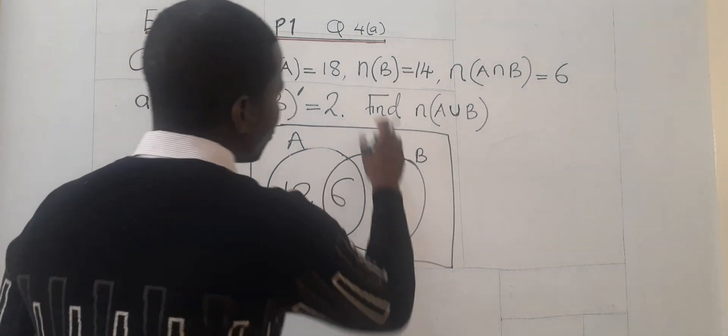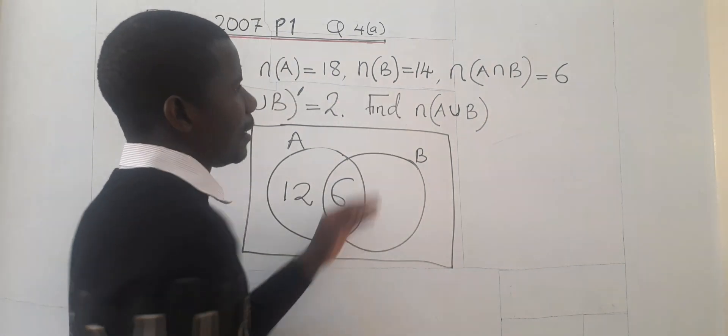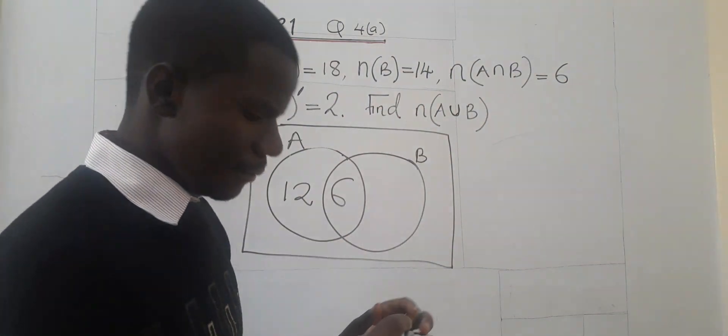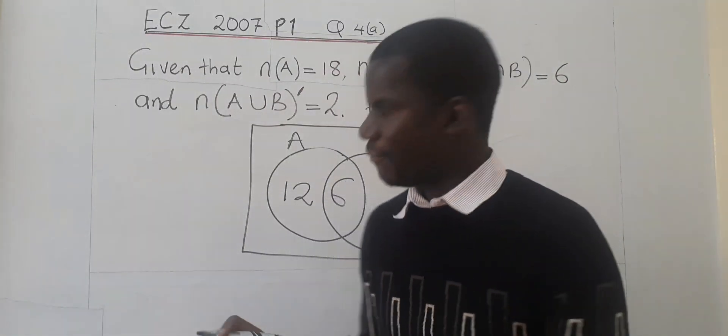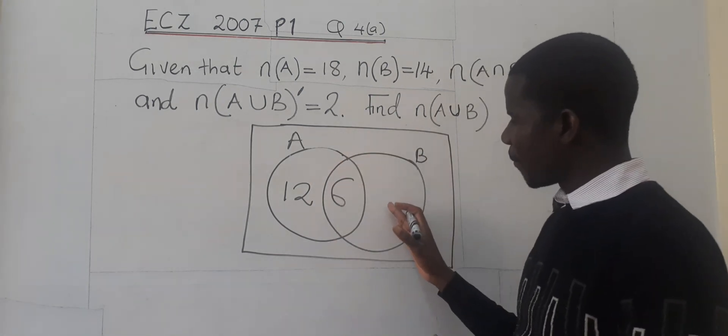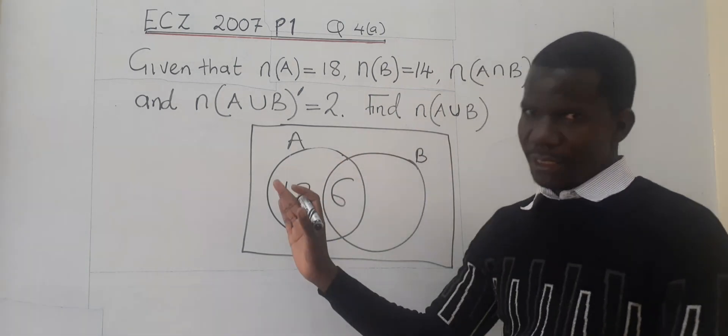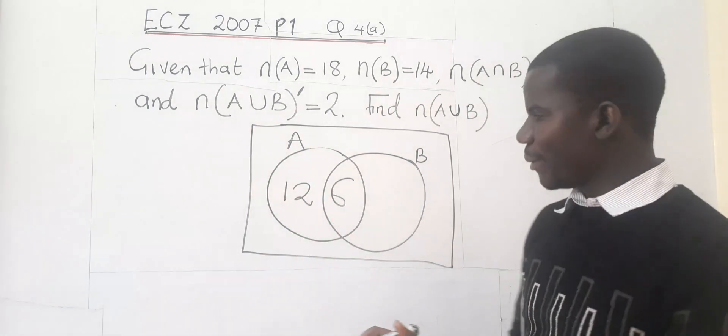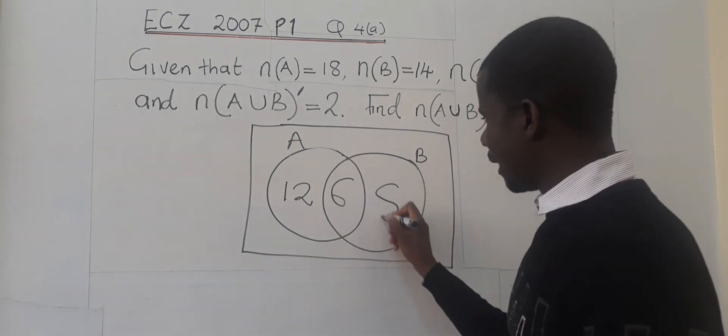We do the same thing. B has 14 elements. Now from the 14, if you look at the entire set, we have 6 already. So we need to knock out the 6 from the 14. What are we going to get? We are going to get 8.